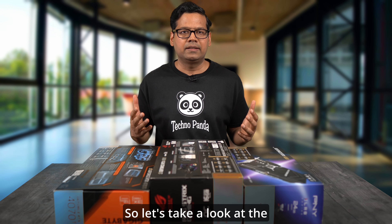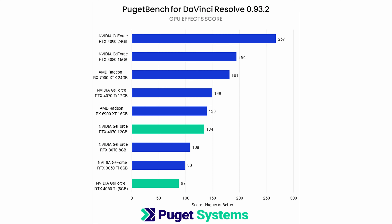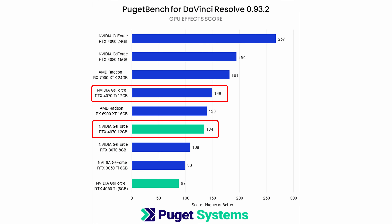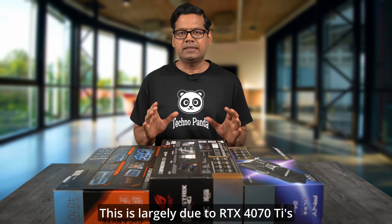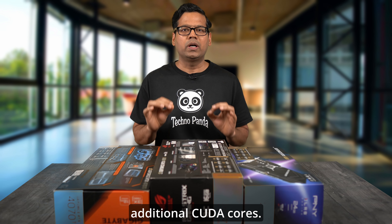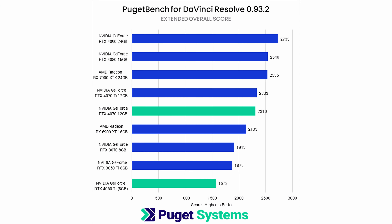So let's take a look at the DaVinci Resolve benchmarks. The RTX 4070 Ti showcases an 11% improvement in GPU effects compared to the RTX 4070, largely due to the 4070 Ti's additional CUDA cores. However, in the extended overall score, the RTX 4070 Ti is practically on par with the RTX 4070.